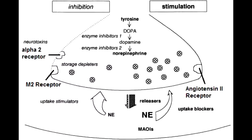What are the other two norepinephrine-release modulating receptors? The other two norepinephrine-release modulating receptors include M2 receptors and angiotensin 2 receptors. M2 receptor stimulation will prevent norepinephrine outflow from the presynaptic nerve endings. Angiotensin 2 activation stimulates the release of norepinephrine into the synaptic cleft.